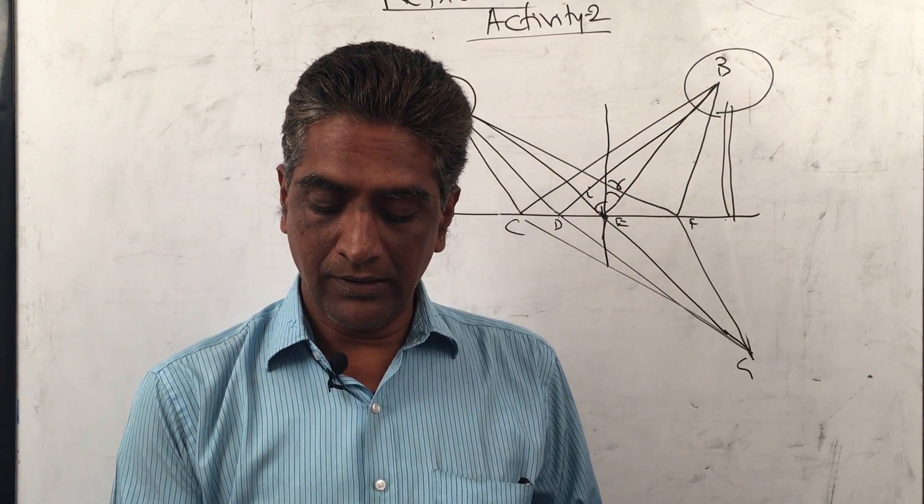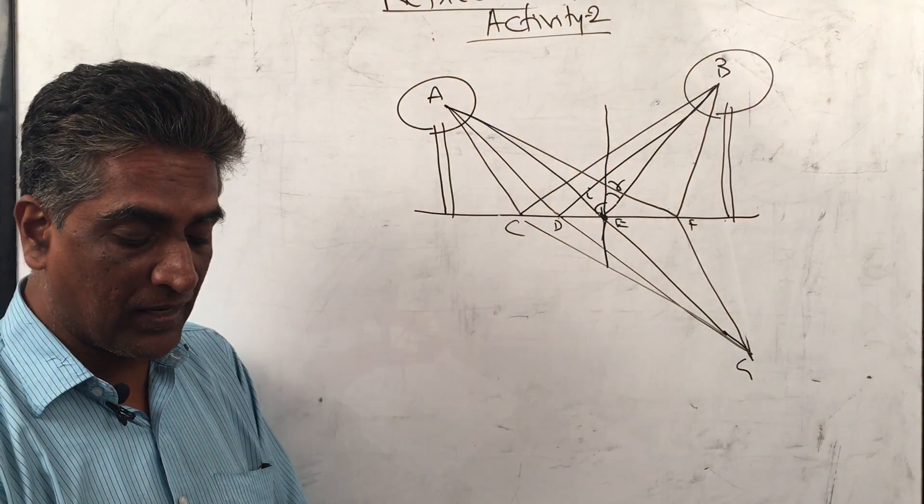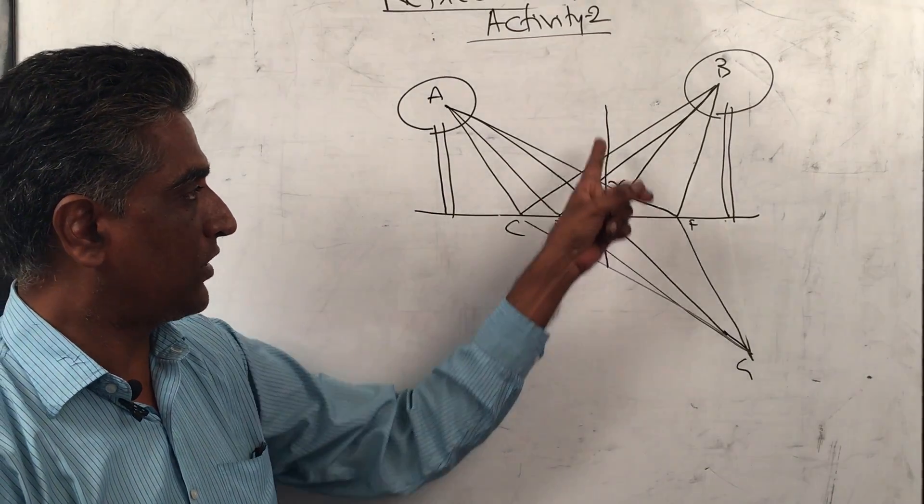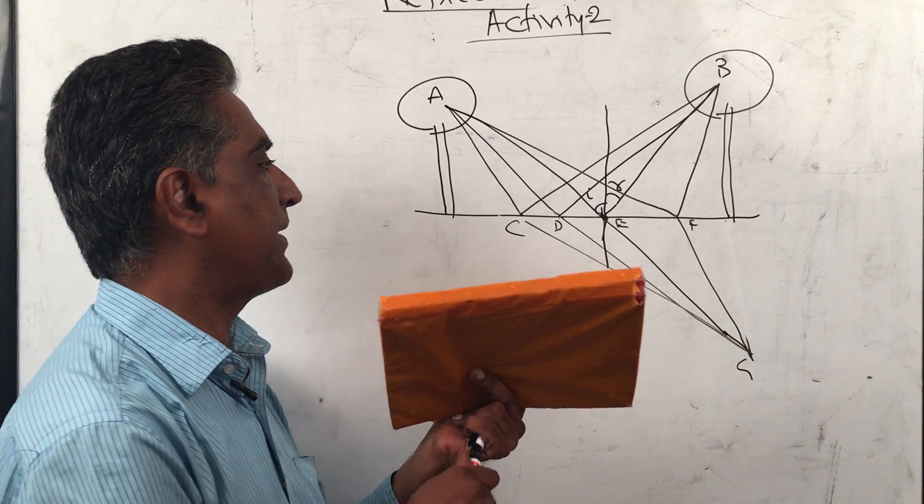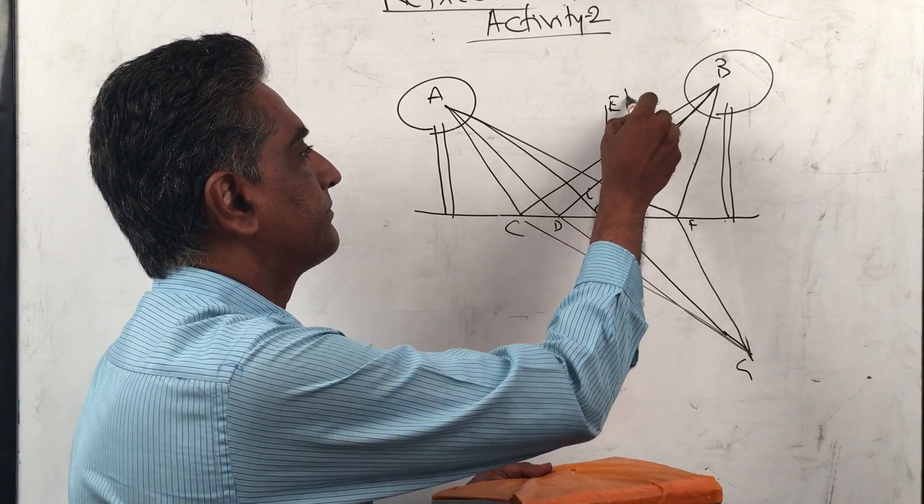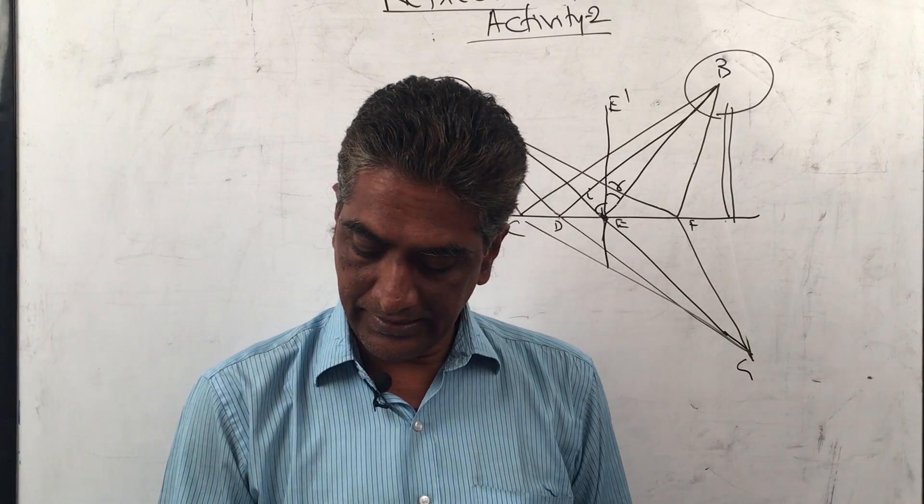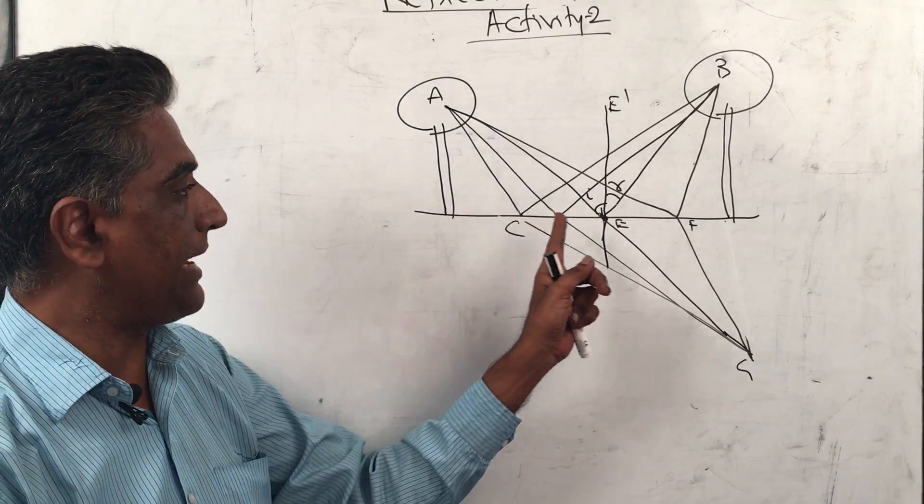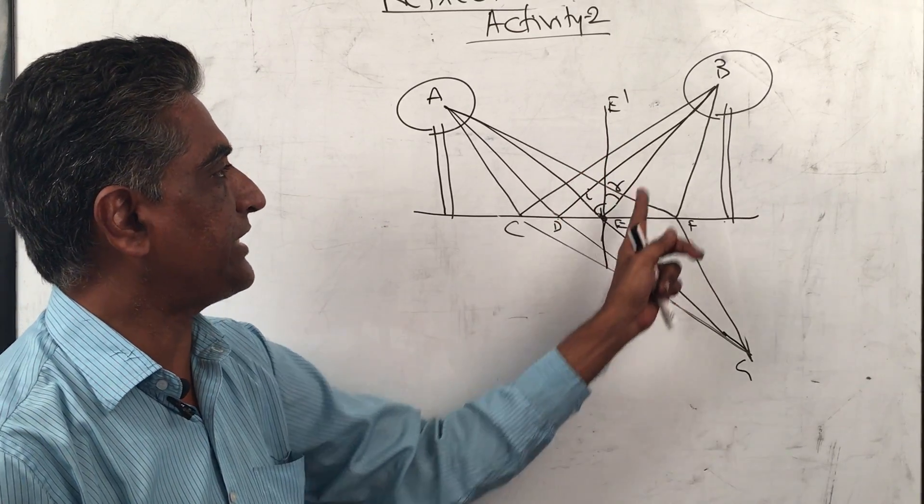If we draw a normal EE dash, the smart crow will pick the grain from point E. If you take EE dash which is perpendicular at point E, we can easily find out that angle AEE dash, angle 1, is equal to angle E dash EB.